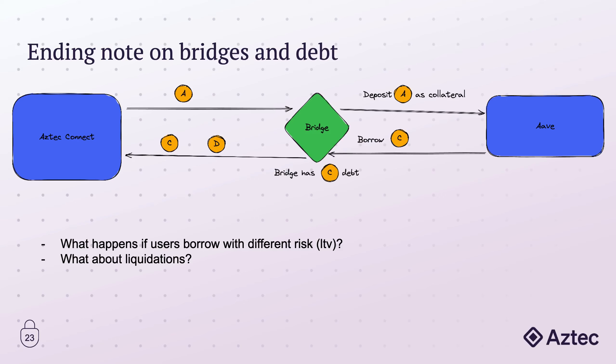An ending note on building a bridge with debt: if you're building a bridge that holds debt — say, an open position where you deposit token A, use that as collateral, and borrow token C — the bridge will have token C as debt. What happens if the bridge is liquidated because of market conditions? Can a user deposit and borrow on another risk value? If they can, they might be able to borrow using someone else's collateral, which is not ideal. You need to think about all the cases where the balances of the bridge can be changed by someone else in a negative direction. For borrowing bridges this is a bit more complex.